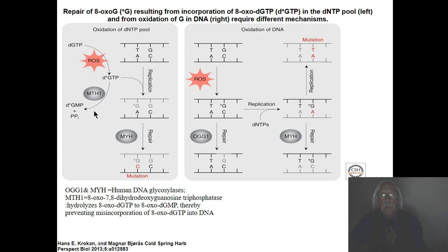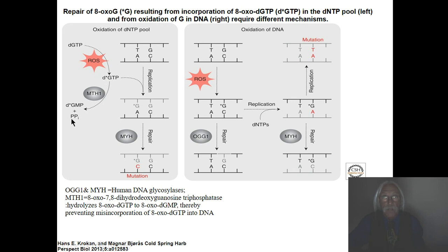Fortunately, there's an enzyme called MTH1 — 8-oxo-7,8-dihydrodeoxyguanosine triphosphatase — and what that enzyme does is it hydrolyzes 8-oxo-dGTP to 8-oxo-deoxyGMP. That is not a substrate for DNA polymerase, so it's no good as an incoming nucleotide. That enzyme, when it's active, eliminates this damaged nucleotide precursor for DNA synthesis before it ever gets incorporated. So that's good.